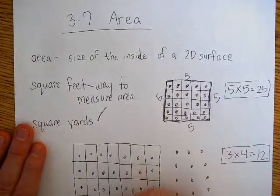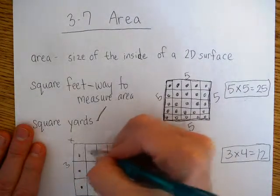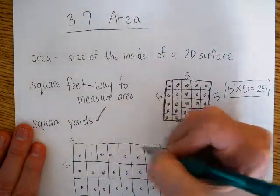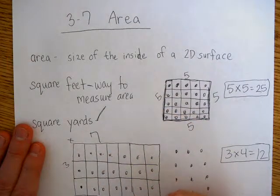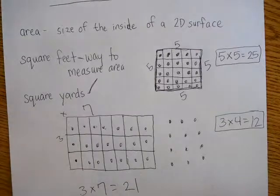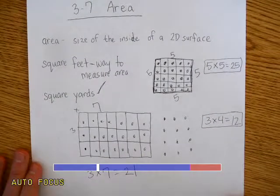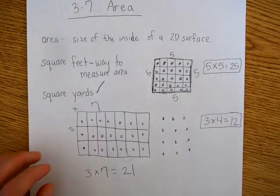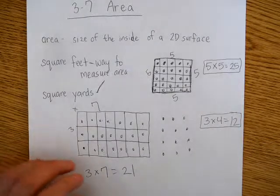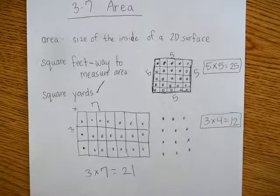And this, you can say it's a 3 by 1, 2, 3, 4, 5, 6, 7. 3 by 7 array. 3 times 7. If you counted them, you would get 21 dots. So you have a 3 by 7 array, or you have 21 dots. And that would be the area. So you can use the rectangle region divided into square units.